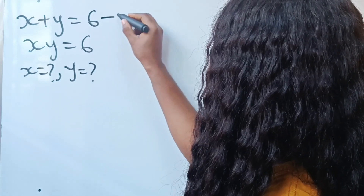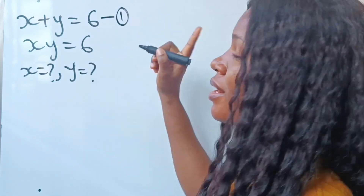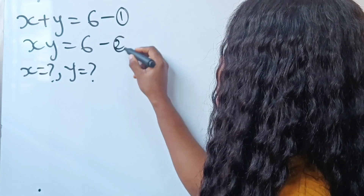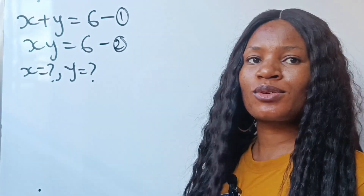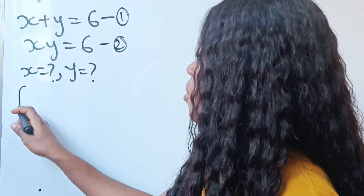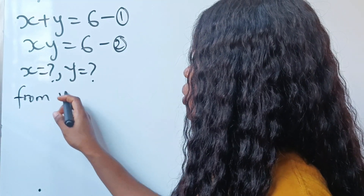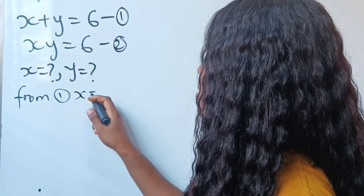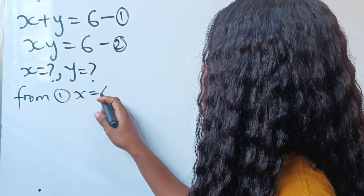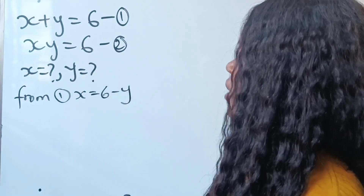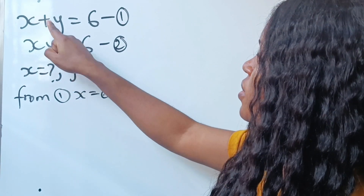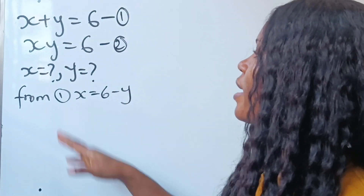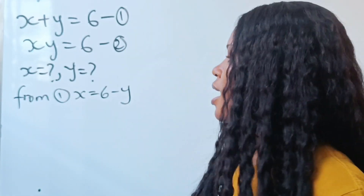We are going to start by calling this equation 1 and this one equation 2. From equation 1, we can see that x is equal to 6 minus y. If we transpose the plus y to the other side, it becomes 6 minus y is equal to x.